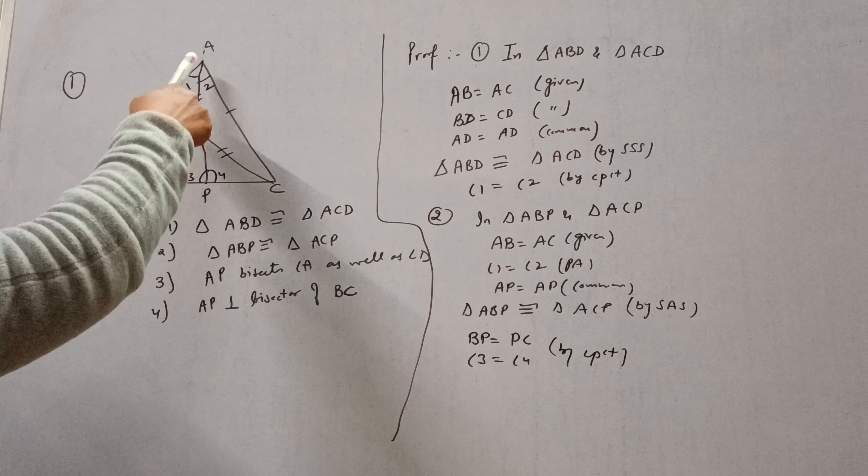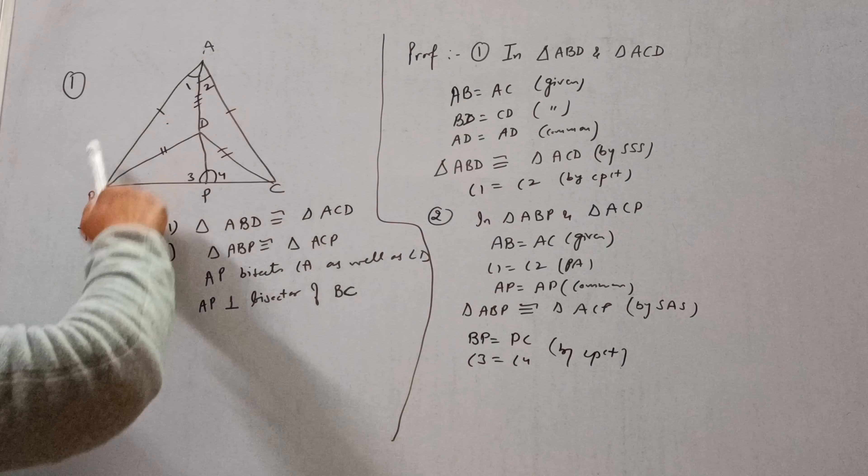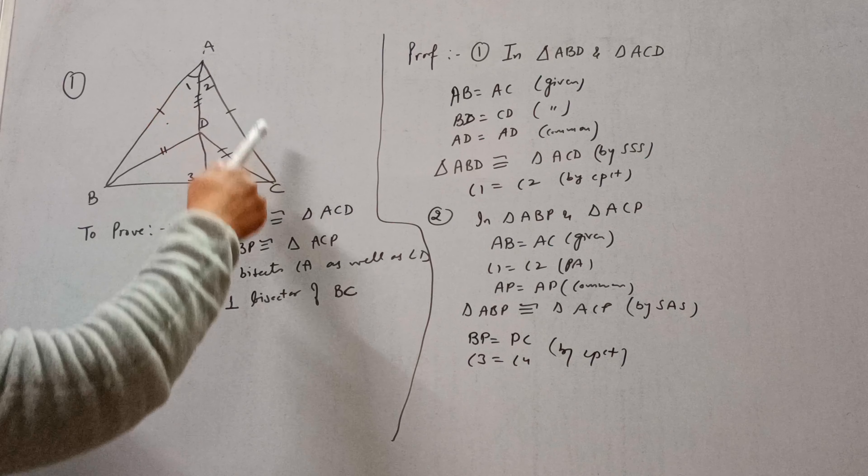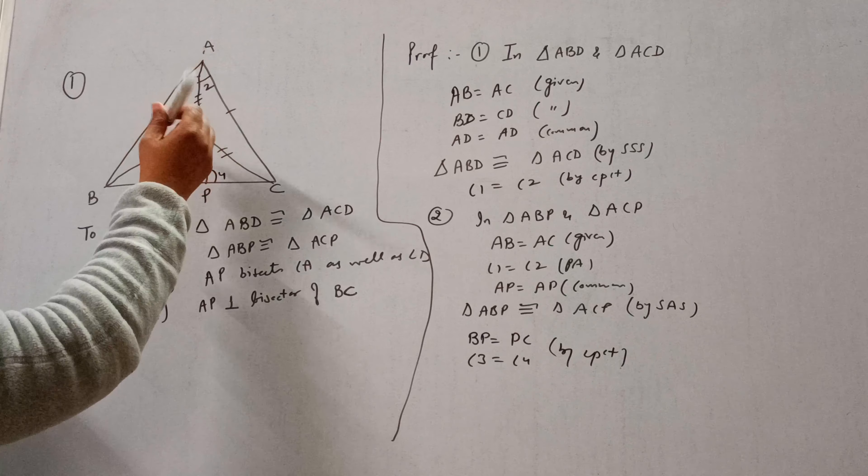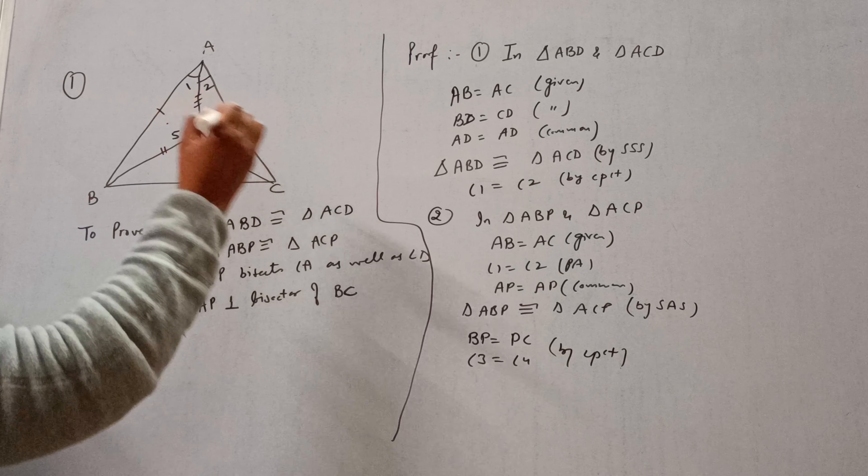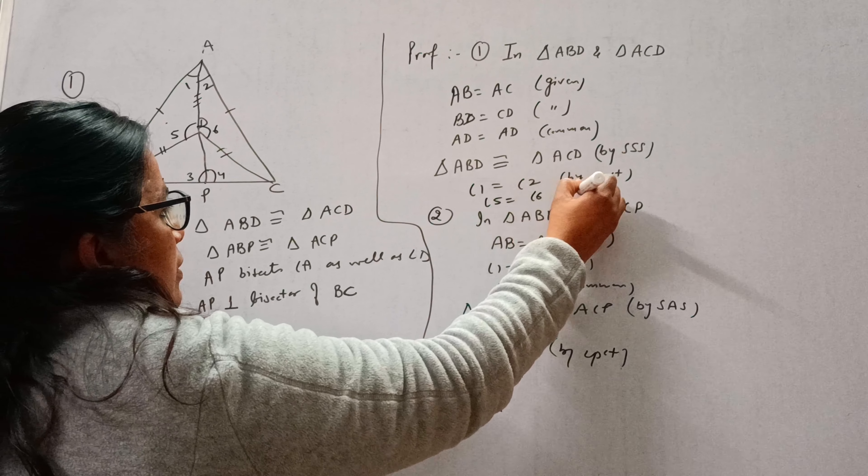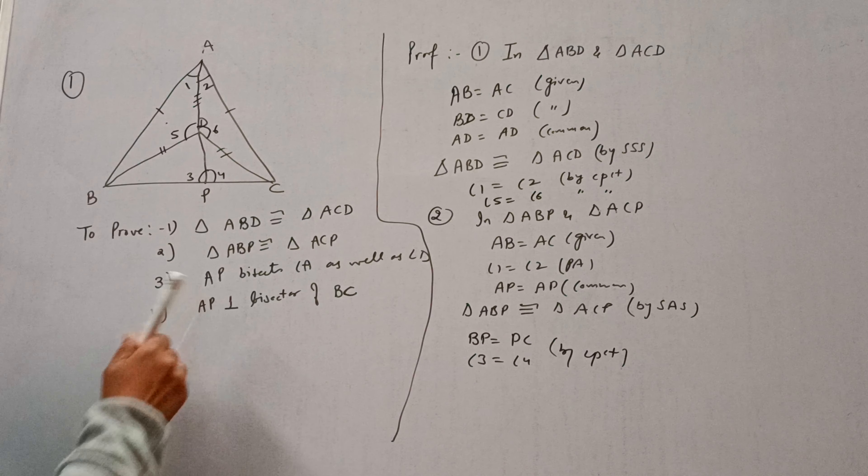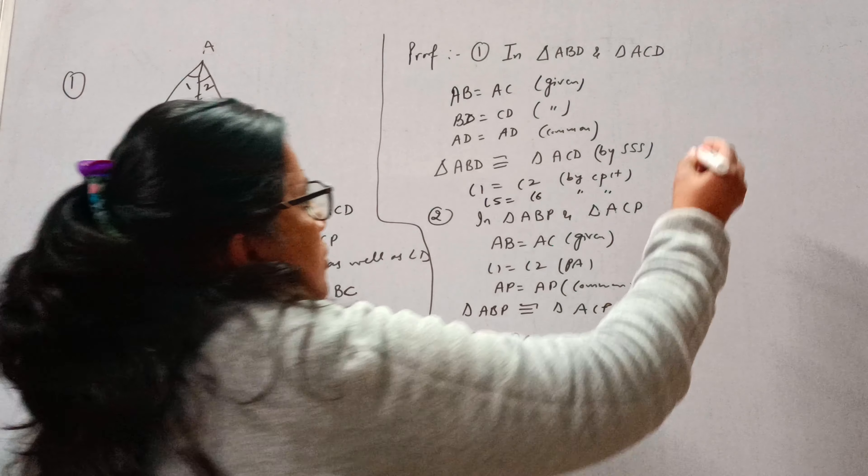See, we have proved the triangles in first case. Triangle ABD is congruent to triangle ACD. So angle 1 equal to angle 2 by CPCT. And also we can take angle 5 equal to angle 6 by CPCT, that we have to use in part number 3. Now see part 3.